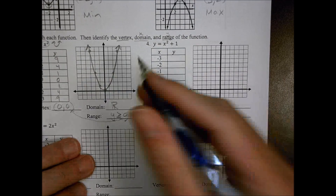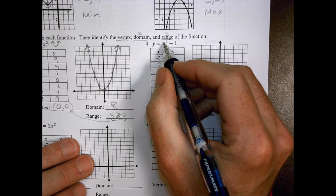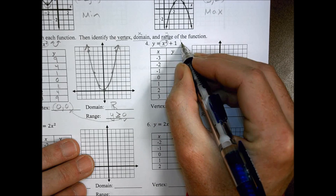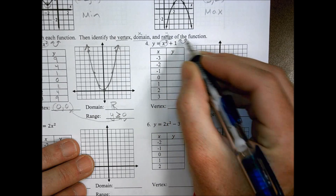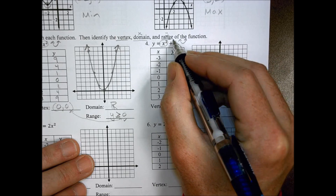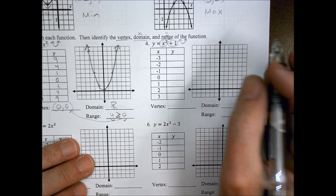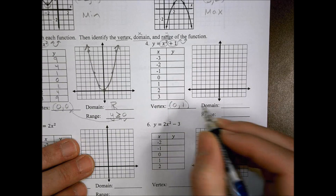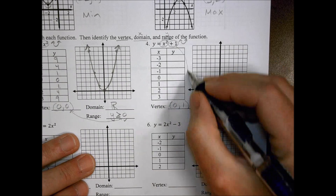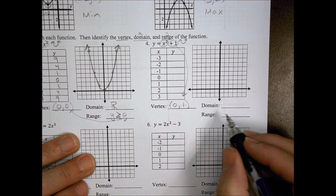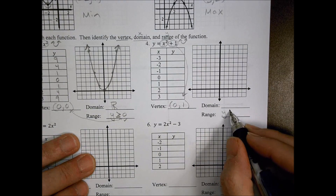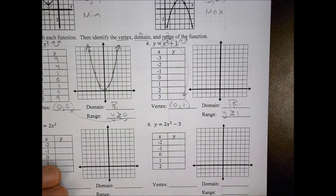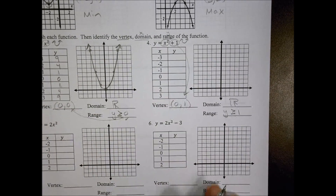For the even ones, I'm not going to do them, but I'm going to point out a couple things. In this case here, this is a positive x squared, which means our parabola is going to be going up. We also have a c value right there, which means that our vertex will be at zero comma one. So that's going to help you out with our range, which would be y greater than or equal to one. And of course, the domain is still all real values of x.